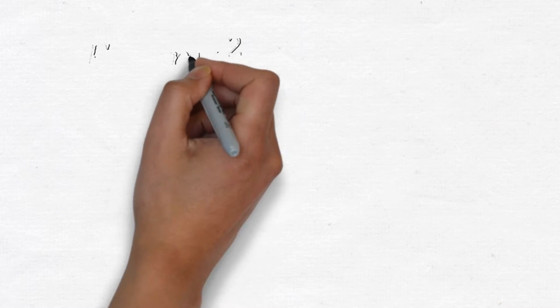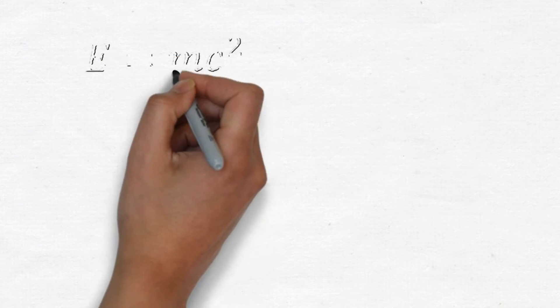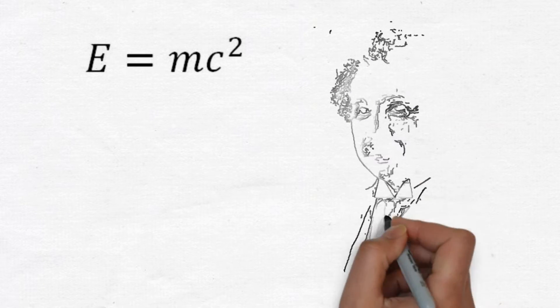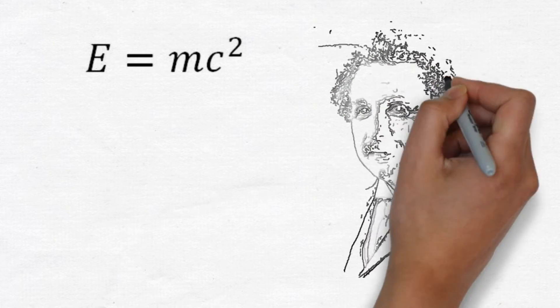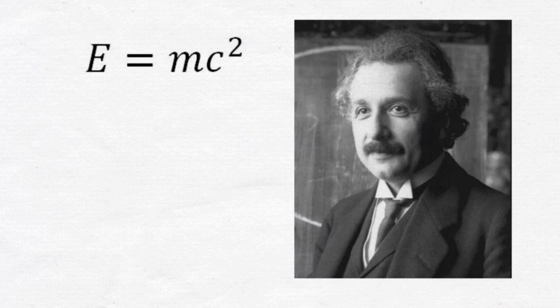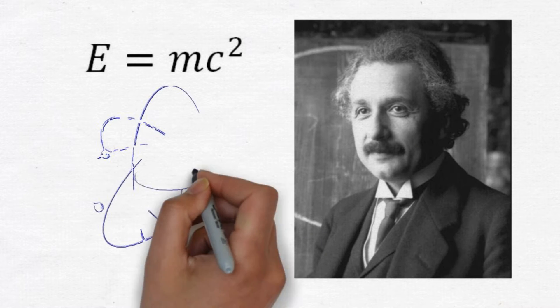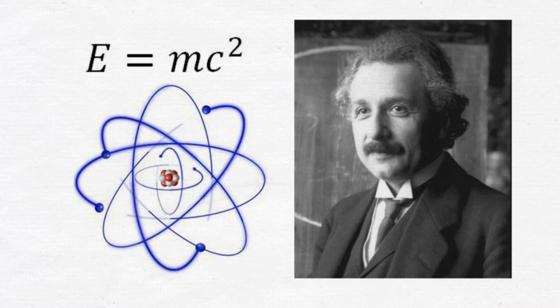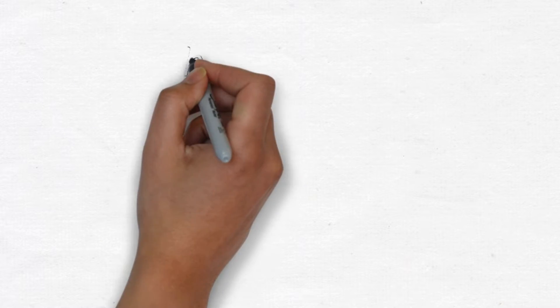E equals mc squared, the most recognized physics equation by the most recognized physicist of all time, Albert Einstein. His mass-energy equation turned our understanding of matter and energy upside down when he taught us that the energy in a particle was directly proportional to its mass.